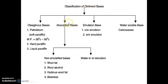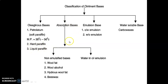Next, we will discuss the classification of ointment bases. There are four main classes: oleaginous base, absorption base, emulsion base, and water-soluble base. In the oleaginous base, the first type is petroleum — that is, soft paraffin — which has a melting point of 38°C to 56°C. The second is hard paraffin, and the third is liquid paraffin. Absorption bases are further classified into two types: non-emulsified bases and water-in-oil (W/O) emulsion, in which water is the internal phase and oil acts as the external phase.